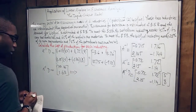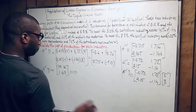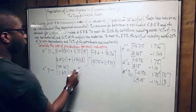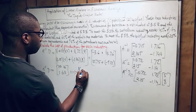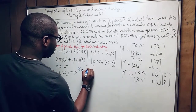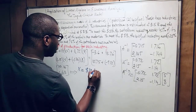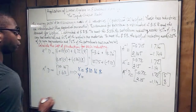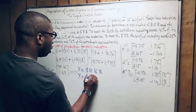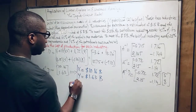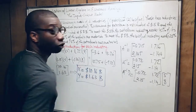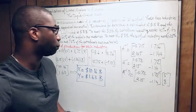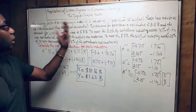The total cost of production for petroleum is $10.16 billion, and the total cost of production for biofuel is $1.63 billion. And this is our final answer. That's how you apply matrix algebra to economic analysis.